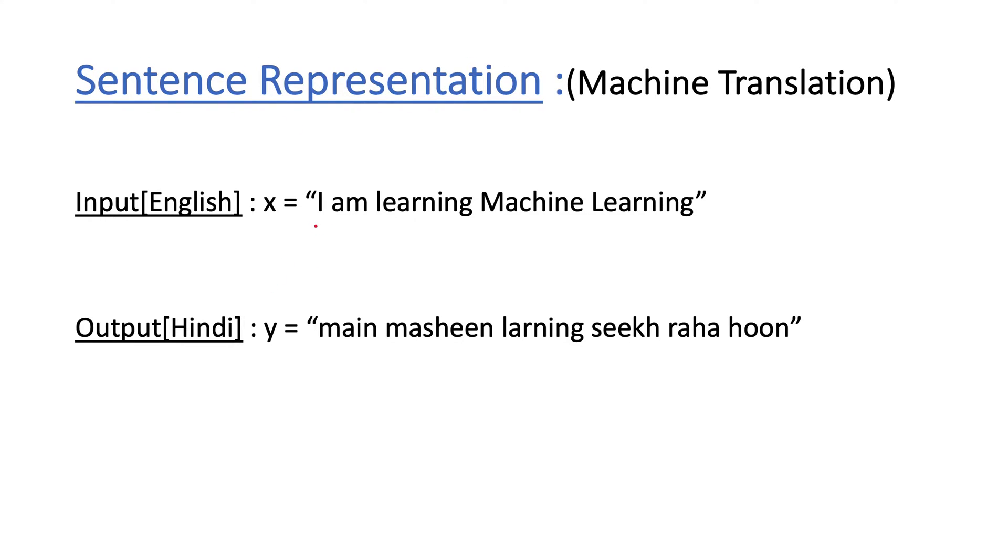One training example represents one sentence. Like in the machine translation example, we have a sentence given in English and we will translate it to a different language in Hindi. That sentence is made up of words. This is just one example; we will have multiples of such sentences in English and multiple sentences in Hindi on which we will train our sequence model.